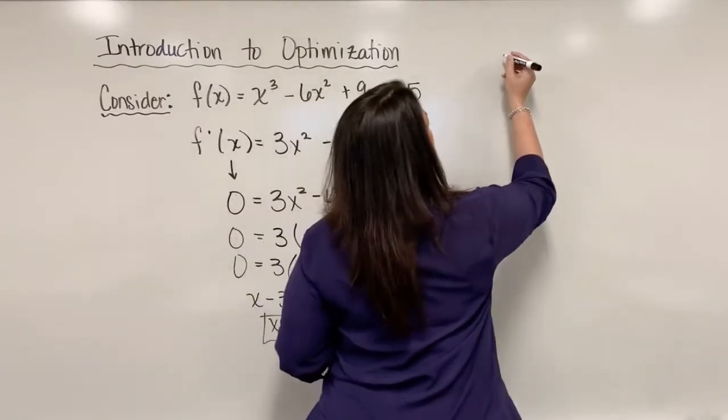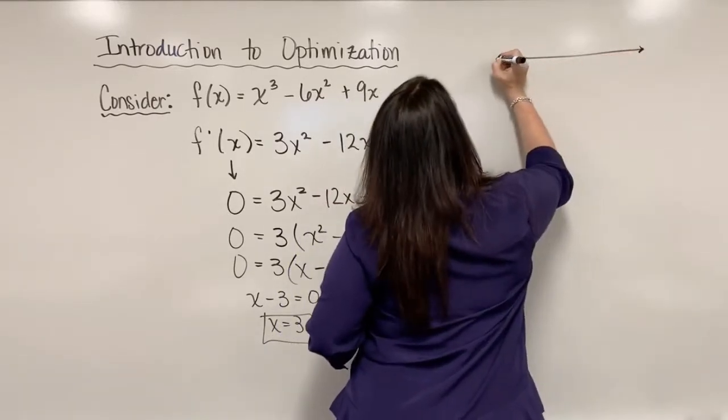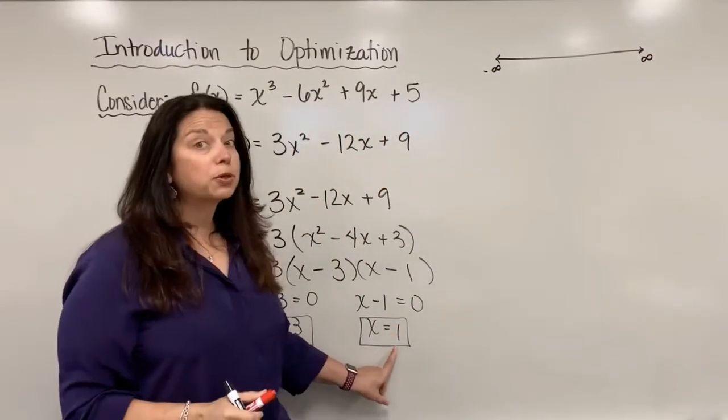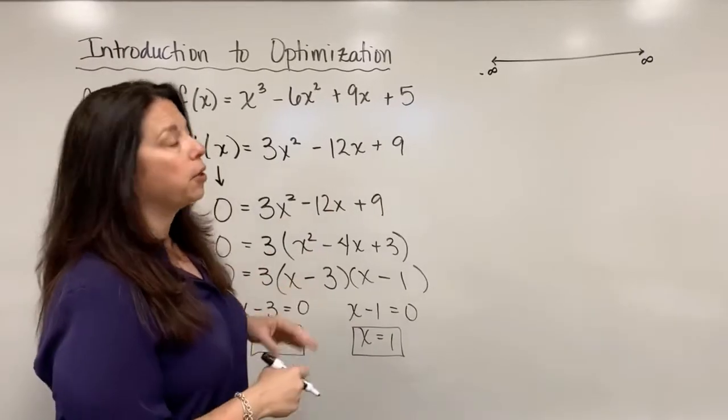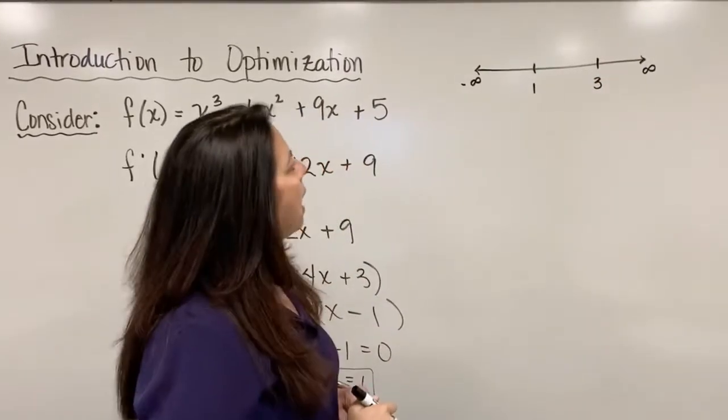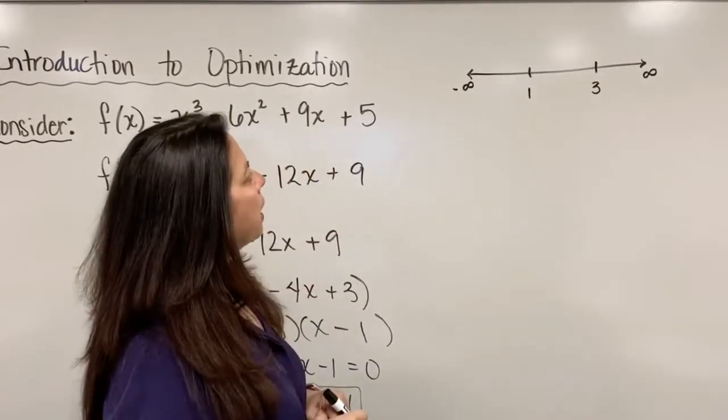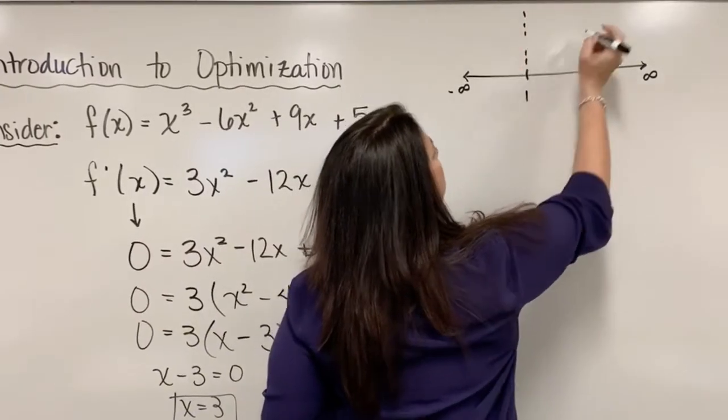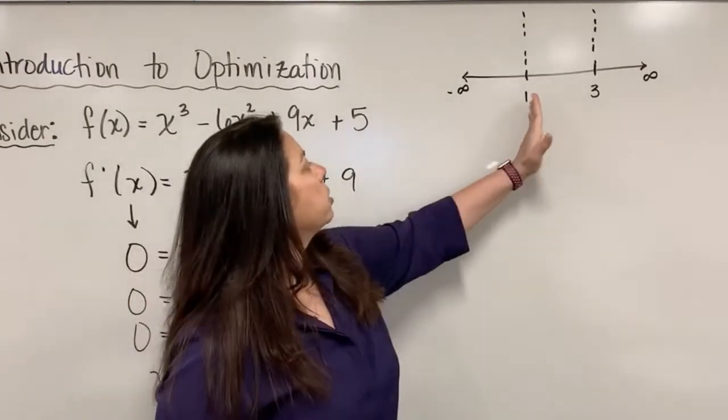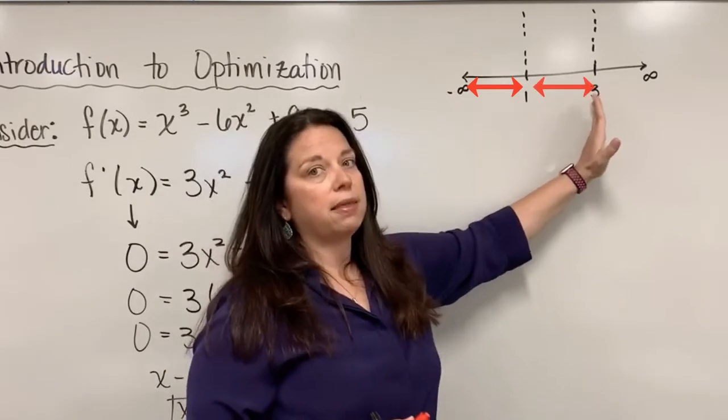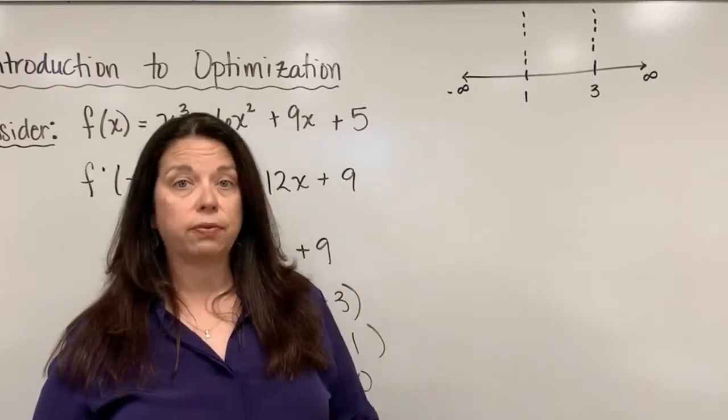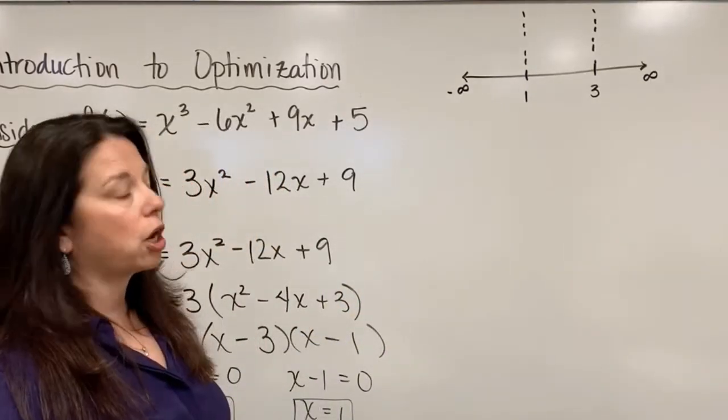So here's what a sign chart will look like. We first start with our number line, say from negative infinity to positive infinity. And we're going to put these possible critical values on that number line in their appropriate position. So here is 1 and over here is 3. And I have to order them appropriately for the number line. And again, these are just possible critical values. And what I'm interested in here is exploring in the intervals to the left of 1, in between 1 and 3, and then beyond 3, whether or not the derivative is positive or whether it is negative. So that's what I'm looking for in the sign chart work.